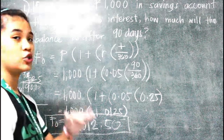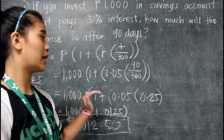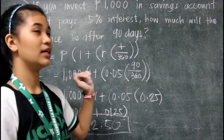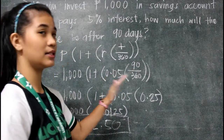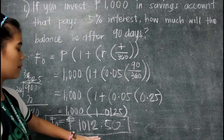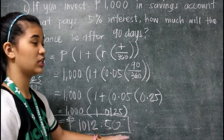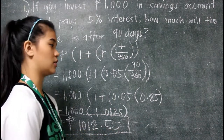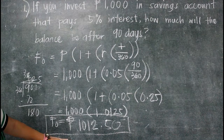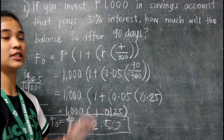So, 1,000 times 1 plus 0.05 times 90 over 360 comes out to 1,012.50 pesos. This is our future value of the ordinary interest.